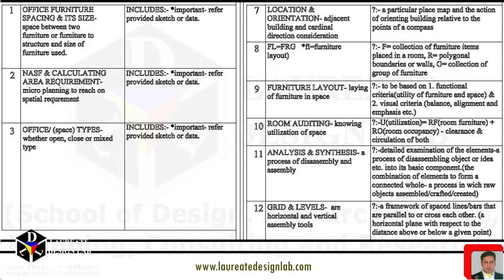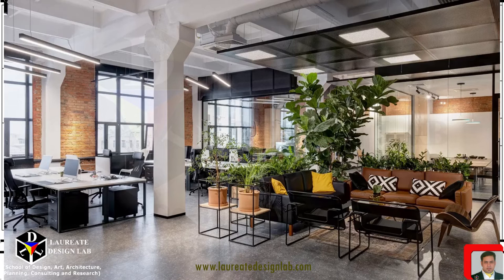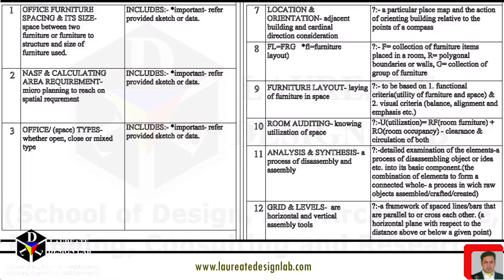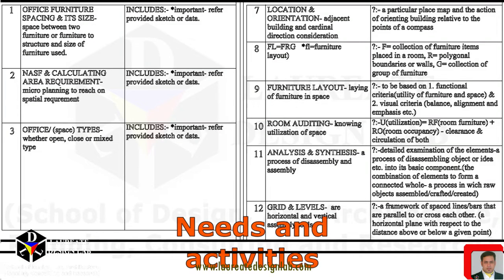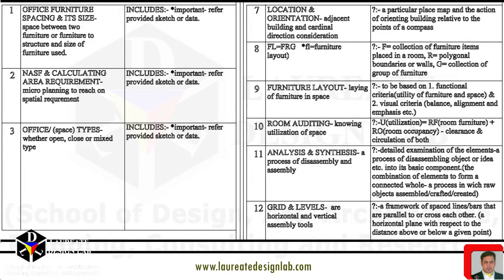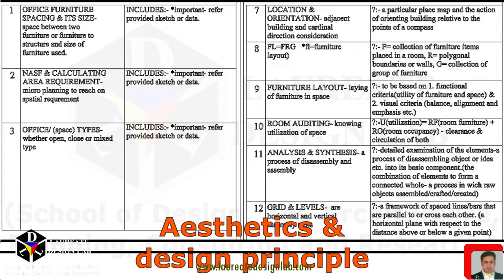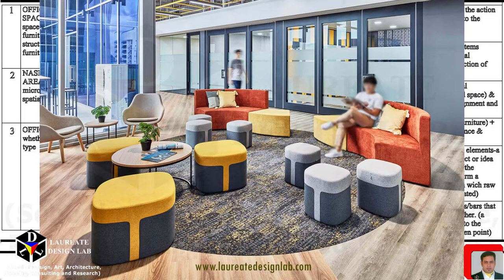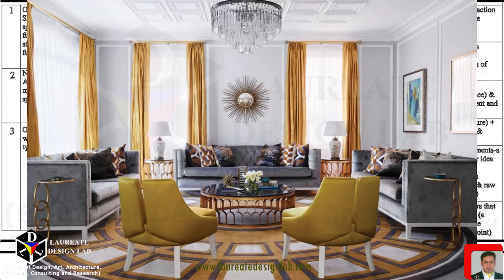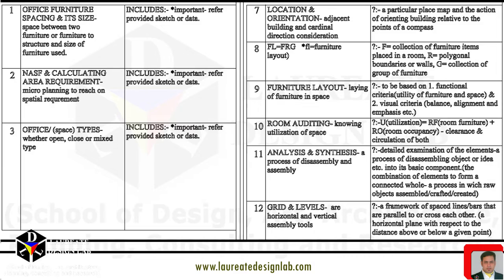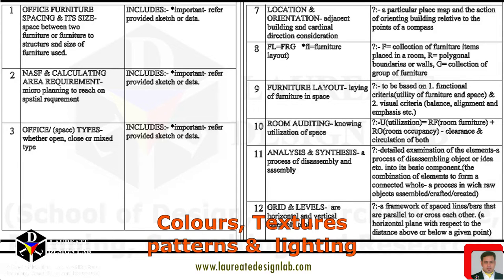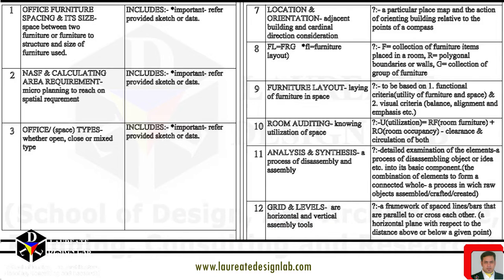Utility of furniture refers to its practical use and functionality, such as providing seating, storage, or a surface for working or eating. Utility of space refers to how well a space is designed and organized to meet the needs and activities of the people using it. Both furniture and space should be functional, efficient, and comfortable to use. Visual criteria of furniture layout refers to the aesthetic and design principles that guide the placement and arrangement of furniture in a space. This includes factors such as balance, proportion, scale, symmetry, and focal points. The goal of visual criteria is to create a visually pleasing and cohesive space that is easy to navigate and use. It also includes the use of colors, textures, patterns, and lighting to create a certain ambience, mood, or theme.